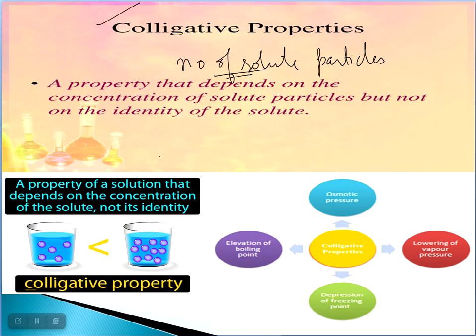You can see in the diagram: here there are fewer solute particles, and here there are more solute particles. So the colligative properties will be shown by this solution because they depend on the number of solute particles, not their identity. The identity can be anything — it doesn't matter.